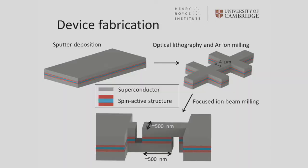I'm aiming to generate spin polarised supercurrents in the superconducting state. I start by sputter depositing a metallic stack where the grey here is the superconductor — it's a kind of sandwich where in the middle we have layers of the spin active structure. I first do a conventional photolithography step to thin this down to a four micron track.